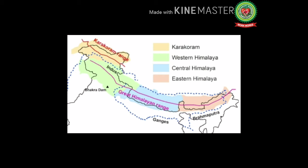There are 14 peaks on Earth which are over 8,000 meters; all these peaks are located in the Himalayas and Karakoram ranges in Asia. The Karakoram Range lies to the north of the Himalayas and passes through the state of Jammu and Kashmir in India and northern Pakistan. Godwin Austen (K2) is its highest peak at 8,611 meters — the second highest peak in the world.